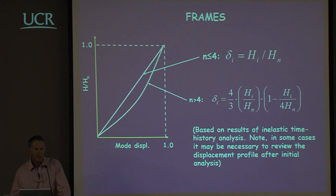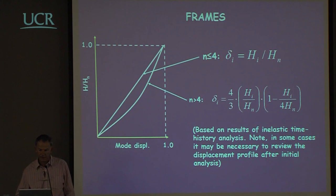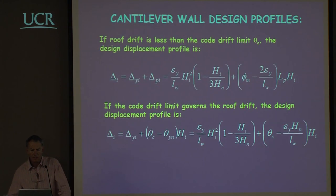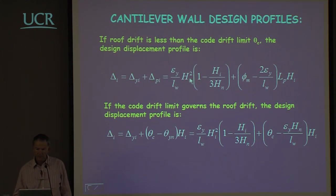In some cases, particularly when the structure is very irregular, it may be necessary to review the assumption of the mode shape at the end of the design and iterate. Generally that won't be necessary. For cantilever wall design profiles we can find the shape more directly, as it is the sum of the elastic and plastic deformation, related to the yield curvature and the height of the individual elements.